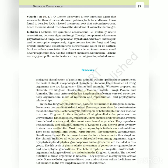Summary: Biological classification of plants and animals was first proposed by Aristotle on the basis of simple morphological characters. Linnaeus later classified all living organisms into two kingdoms - Plantae and Animalia. Whittaker proposed an elaborate five kingdom classification - Monera, Protista, Fungi, Plantae and Animalia. The main criteria of the five kingdom classification were cell structure, body organization, mode of nutrition and reproduction, and phylogenetic relationships.